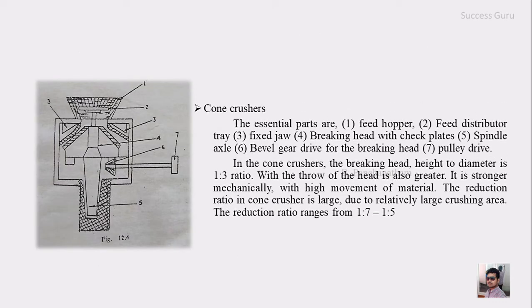The first thing we are going to see is the cone crusher. The left side image shows the sketch of the cone crusher which consists of a feed hopper, then the feed distributor plate tray, then there are fixed jaws, and the breaking head with the check plates which is fixed here.